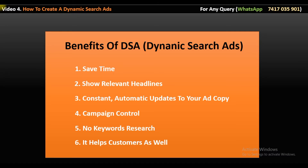The ad will be quite similar to the query that the customer searched on Google. So whatever query a customer searches on Google, Google creates an ad around that query — like 'buy shoes online' will appear in the heading. Customers prefer to click on the ad that is most related to their query. So if we have created a dynamic search ad, customers will prefer to click on it.